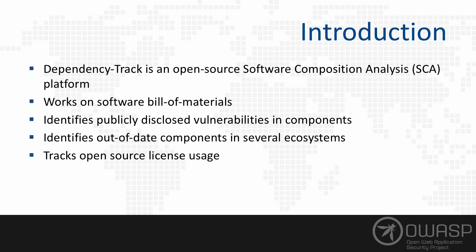In this video we're going to talk about CycloneDX Bill of Materials and how that all relates to some other specifications to make Dependency Track do some pretty magical things. Dependency Track is an open source software composition analysis platform. It tracks all the components used in applications as Bill of Materials. Applications are built on top of existing third-party and open source components, and it's important to identify and catalog those components to discover known publicly disclosed vulnerabilities as well as checking if components are out of date.